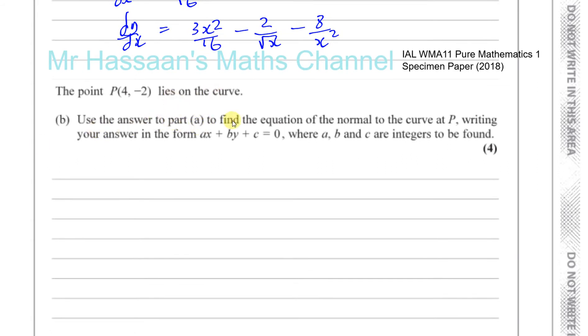Now part b says: the point P(4, −2) lies on the curve. Use the answer to part a to find the equation of the normal to the curve at P, writing your answer in the form ax plus by plus c equals zero, where a, b, and c are integers to be found.